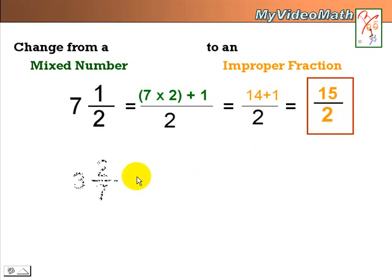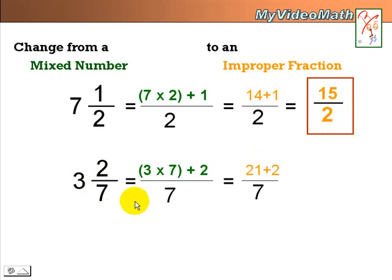Let's do another one. 3 and 2 7ths. 3 times 7 plus 2. Remember that? 23 over 7 is a converted improper fraction.